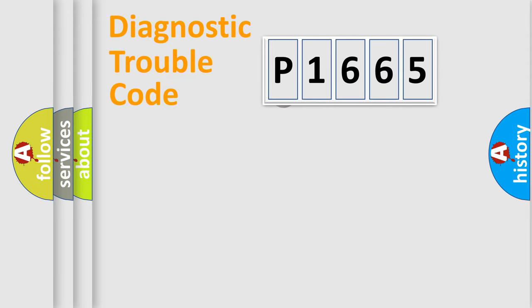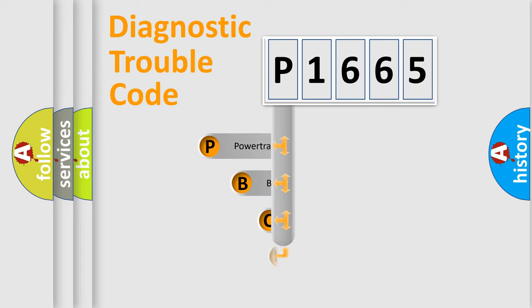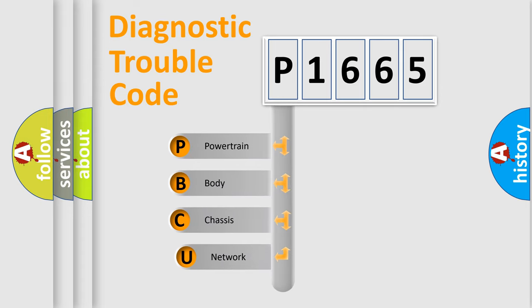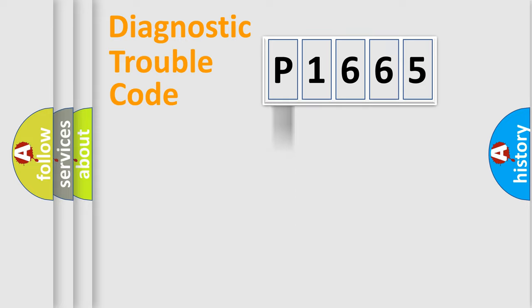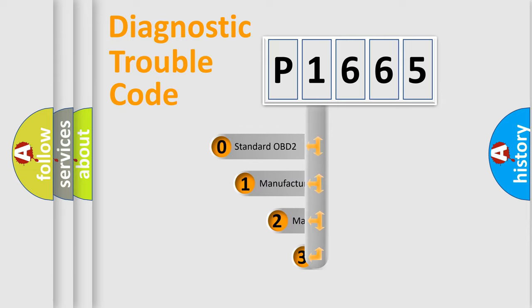First, let's look at the history of diagnostic fault code composition according to the OBD2 protocol, which is unified for all automakers since 2000. We divide the electric system of an automobile into four basic units: Powertrain, Body, Chassis, and Network. This distribution is defined in the first character of the code.